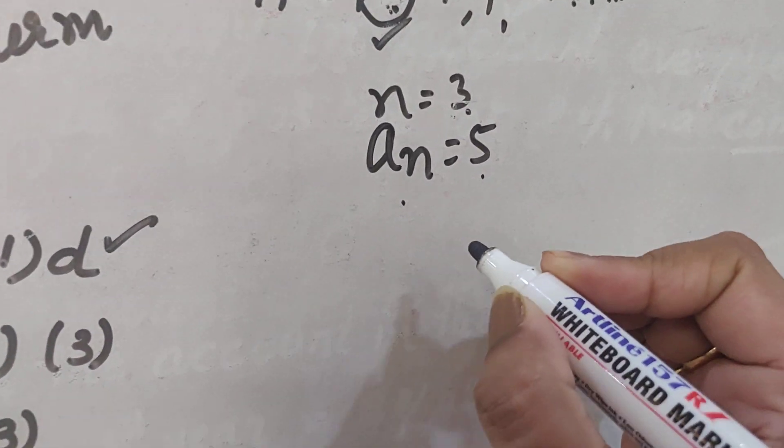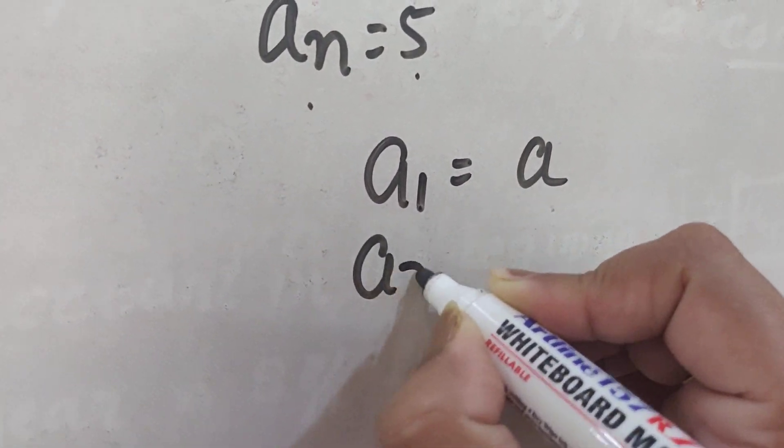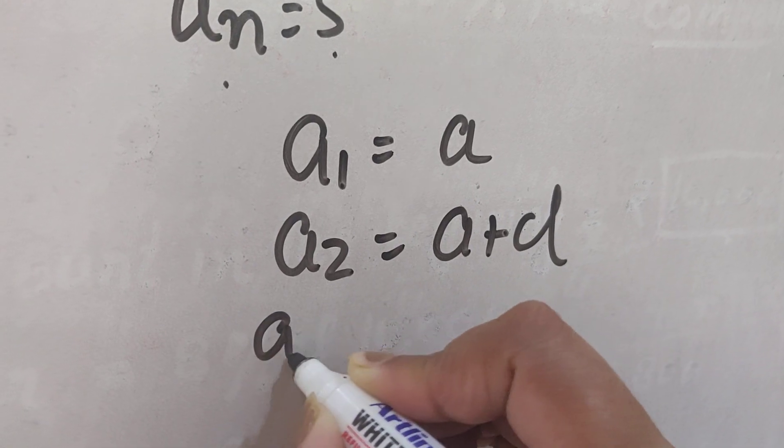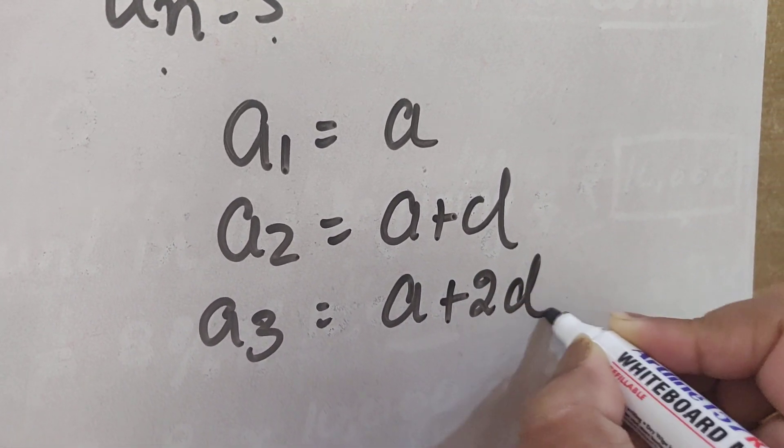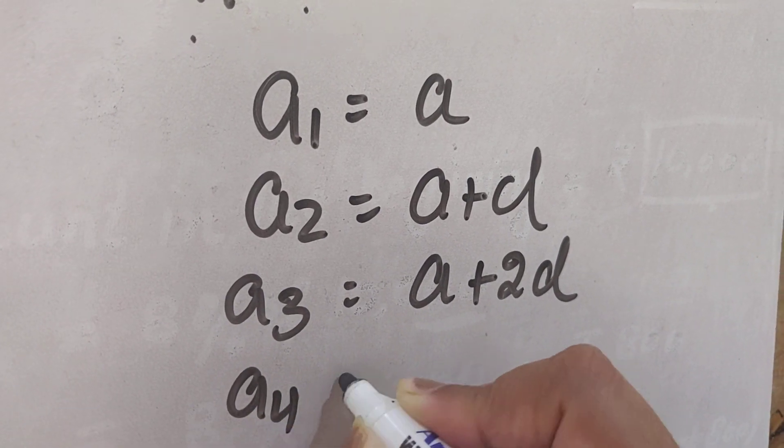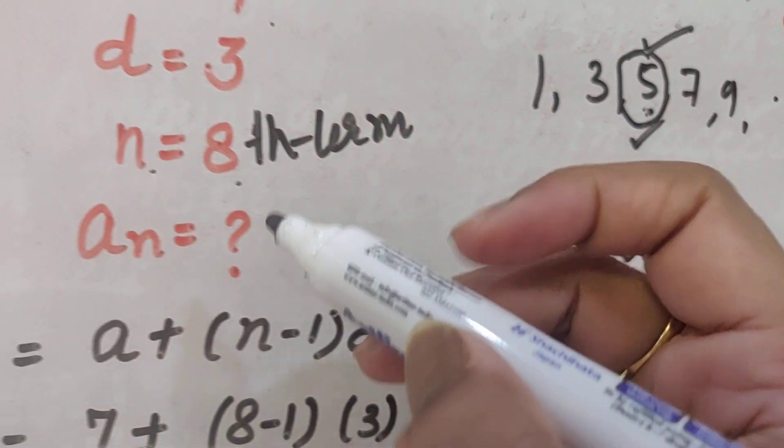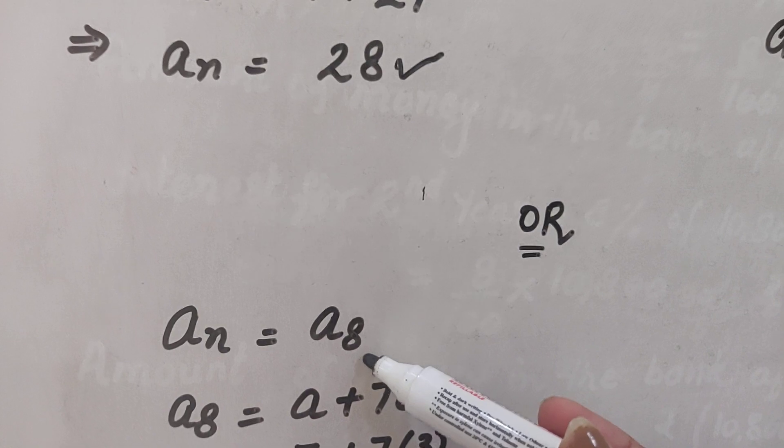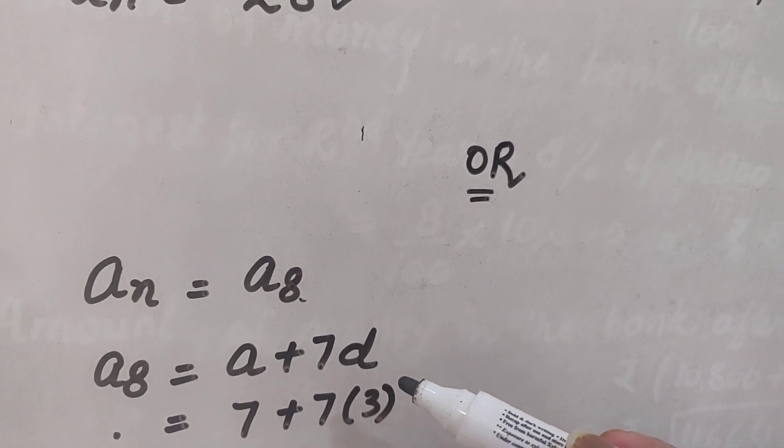You saw that when we are finding A1, it is simply A. A2 is A plus D. A3 is A plus 2D. A4 is A plus 3D. So, when you know you have to find the 8th term, that means you know that AN means A8, you have to find.